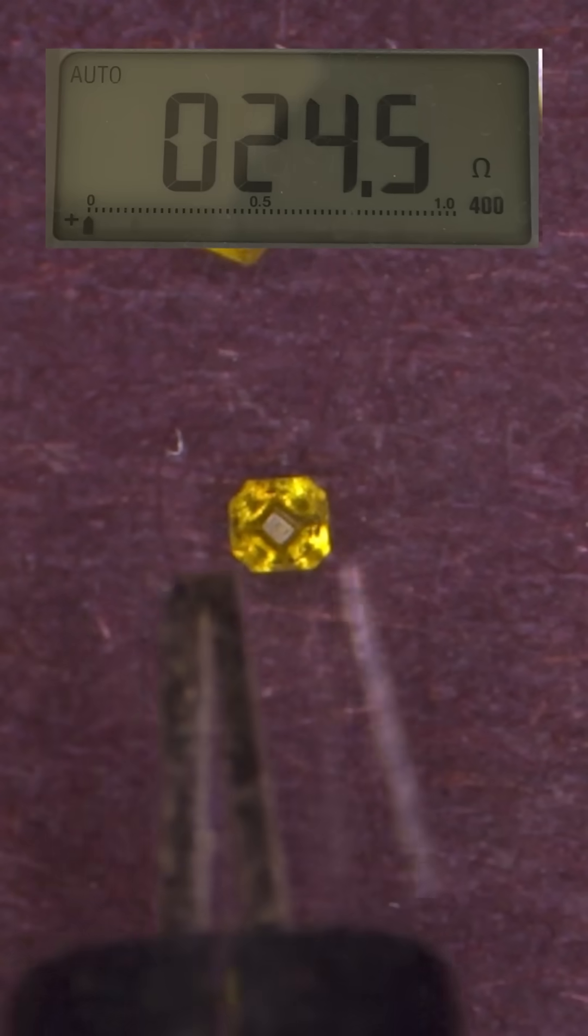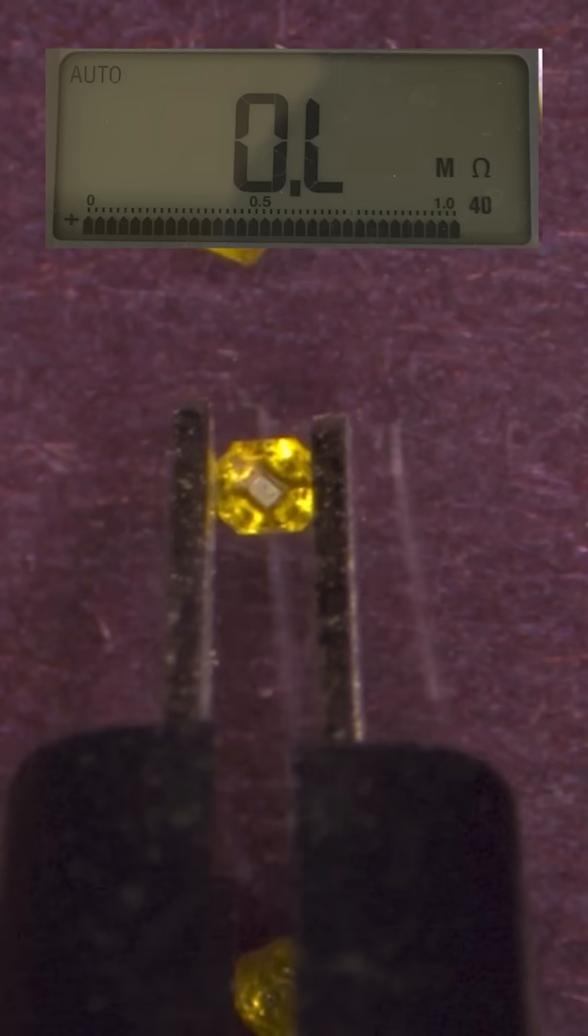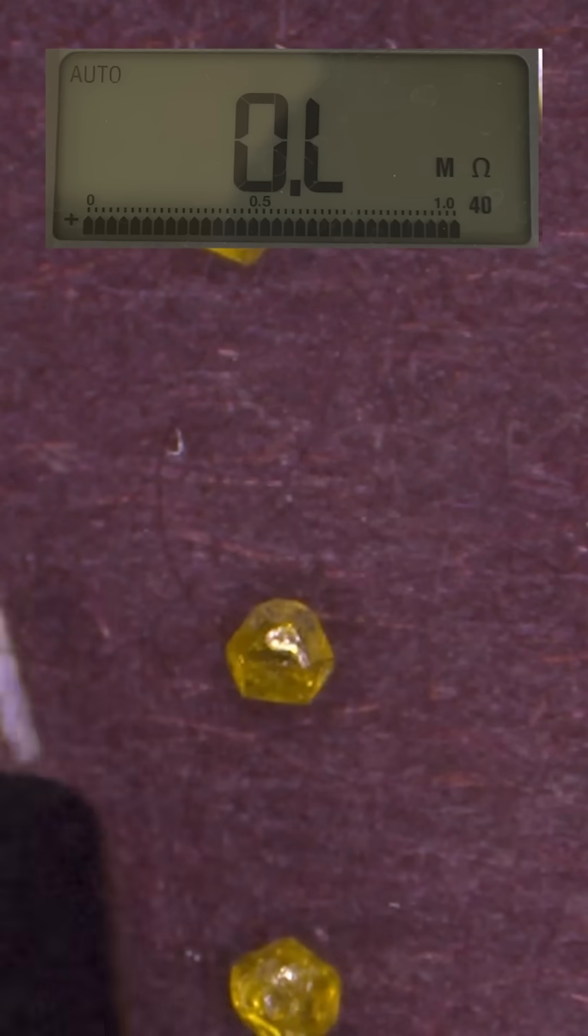I also have a small probe that I can use under a microscope. If I touch the leads together, I get a value. If I grab the diamond with them, however, there is no flow of electricity, because all of the electrons are bonded to other atoms.